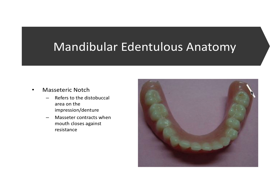When border molding for the upper denture, we'd have the patient's mandible go left and right so the coronoid notch would swipe the disto-buccal corner. Here for the lower, we have the patient close against resistance so the masseter contracts and flattens that area of the denture impression, making sure it's not overextended.